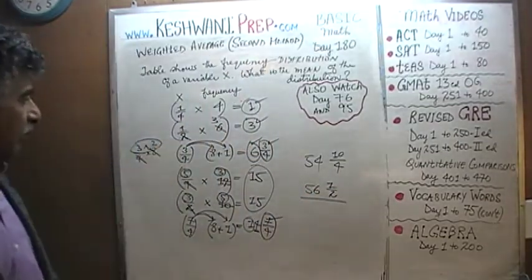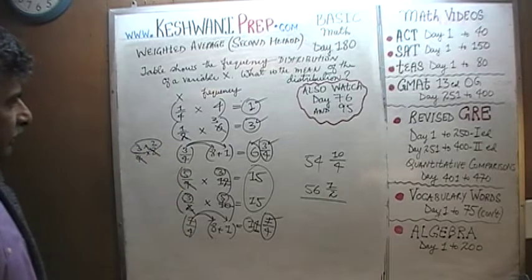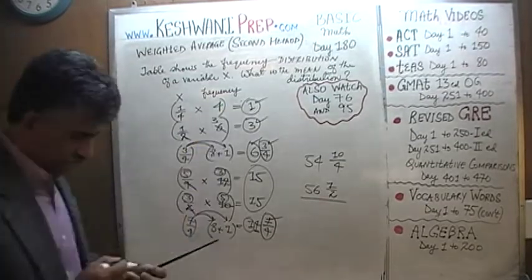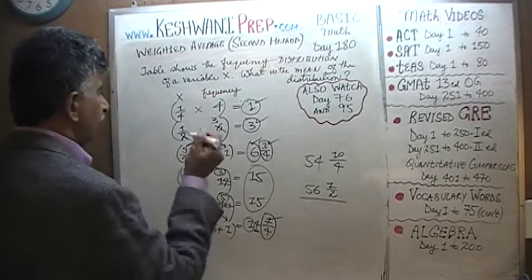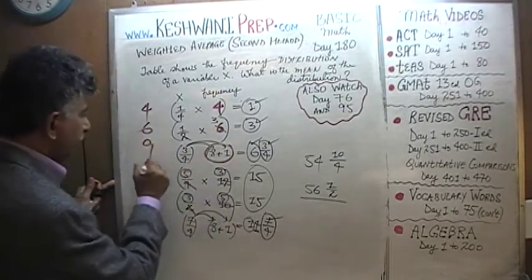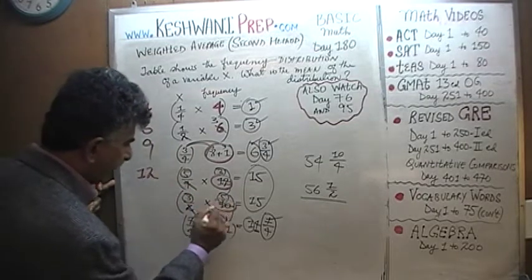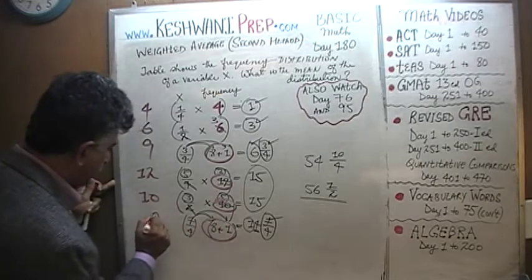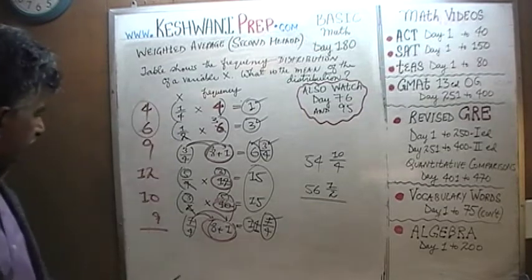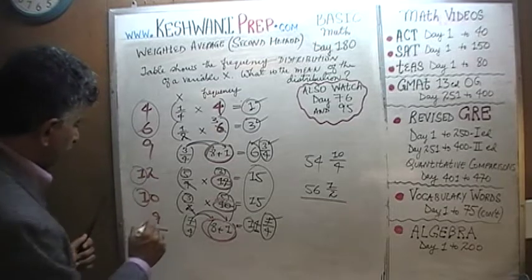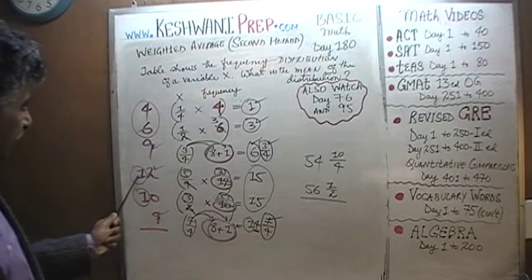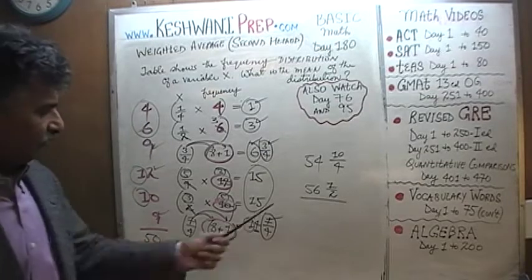Now we have to figure out how many people we have total. We had four people, six people, nine people, twelve people, ten people, and nine people. Six plus four is ten, ten plus ten is twenty, twenty plus ten is thirty. Nine plus nine is eighteen, eighteen plus two is twenty — so twenty, thirty, forty, and fifty. We have fifty people total. So it's fifty-six and a half divided by fifty.